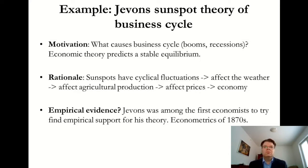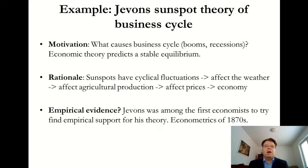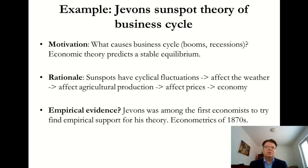Interestingly, when I was reading about the history of econometrics, this was actually an attempt to find empirical support for the sunspot theory. Jevons was one of the first economists to resort to empirical data to support theorizing. In that sense, this would be econometrics of the 1870s revisited. I should also mention that when Jevons was presenting this theory, he was totally ridiculed by his colleagues, which is also one of the reasons why the sunspot theory hasn't been one of his most famous works.